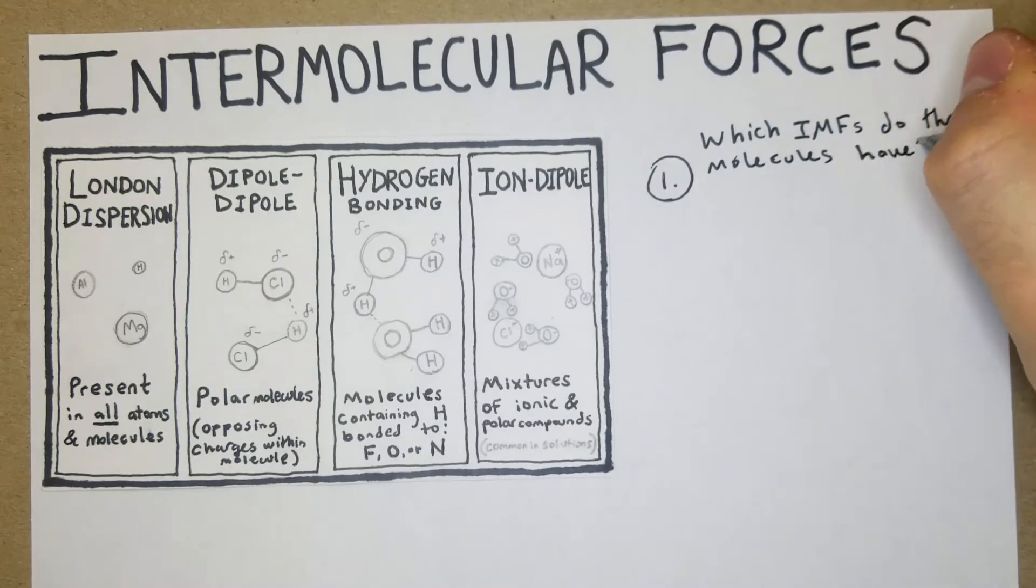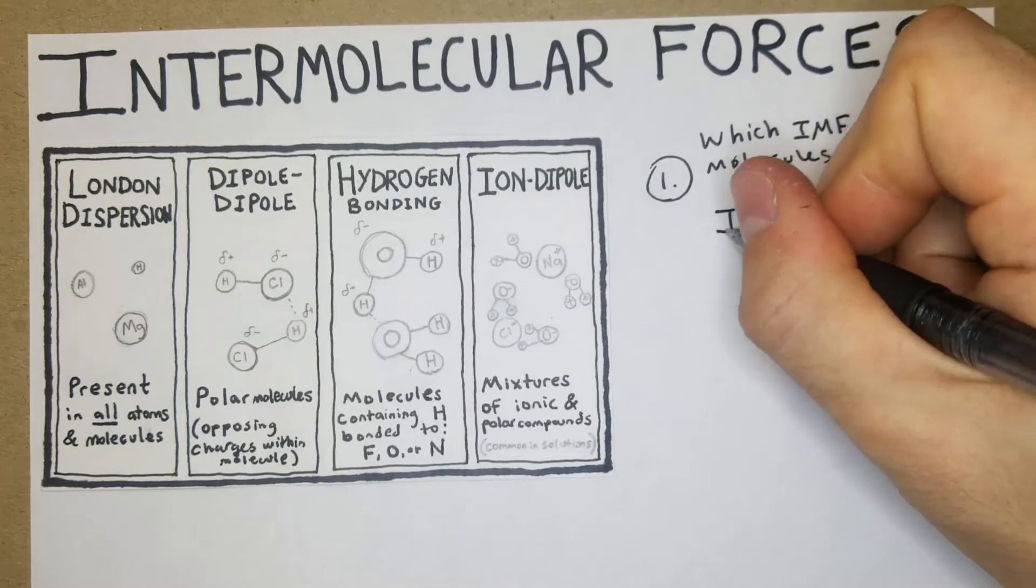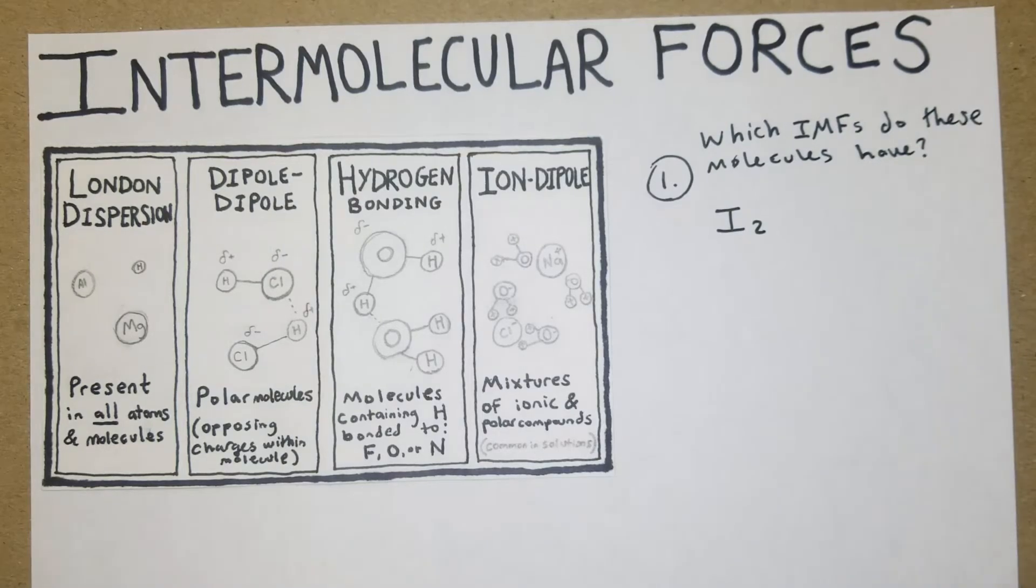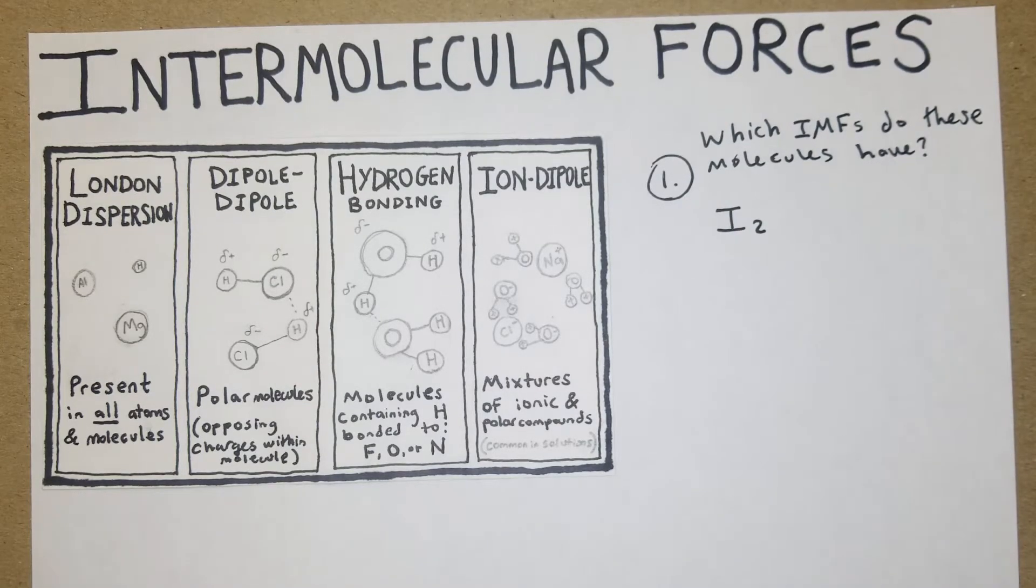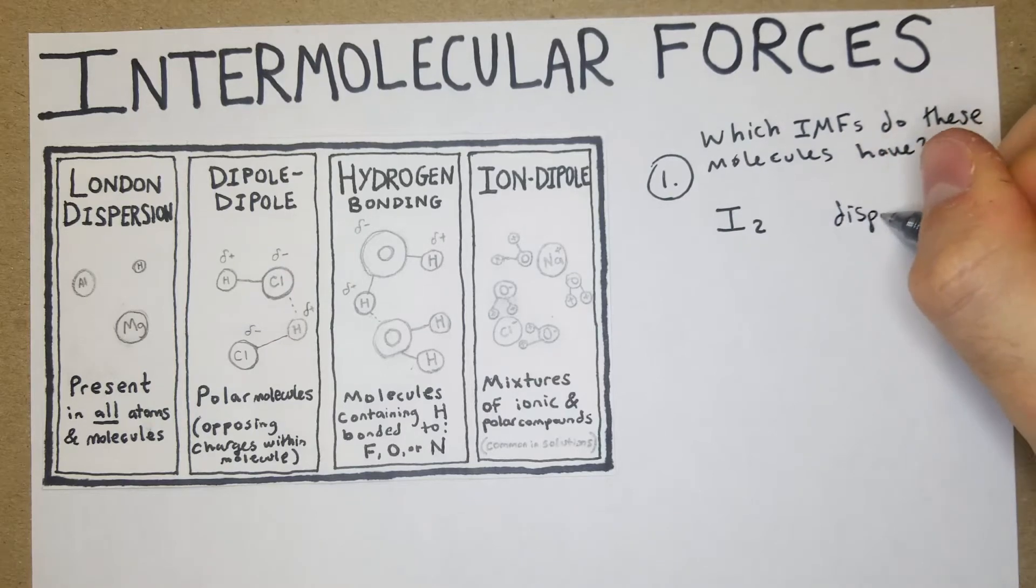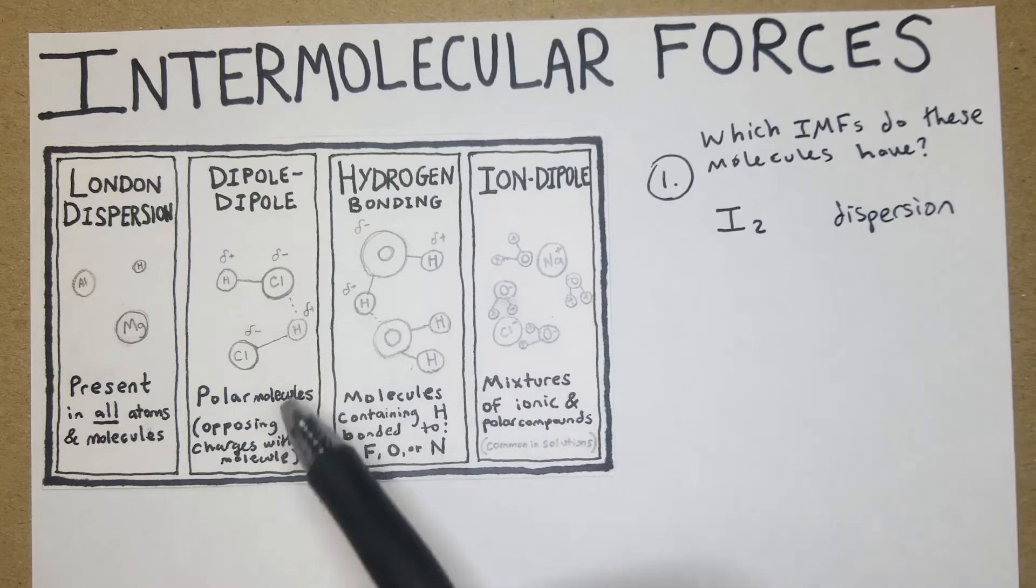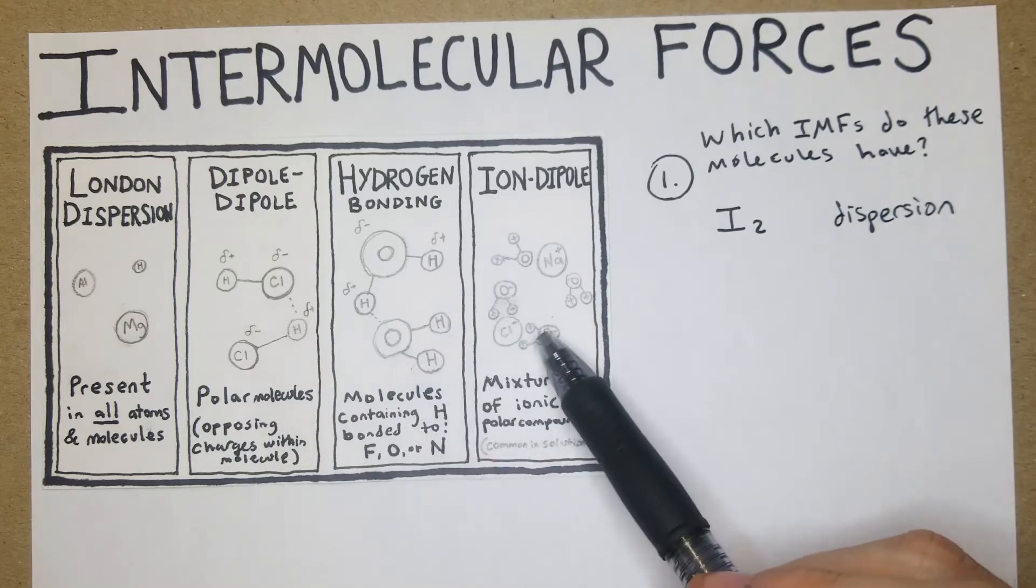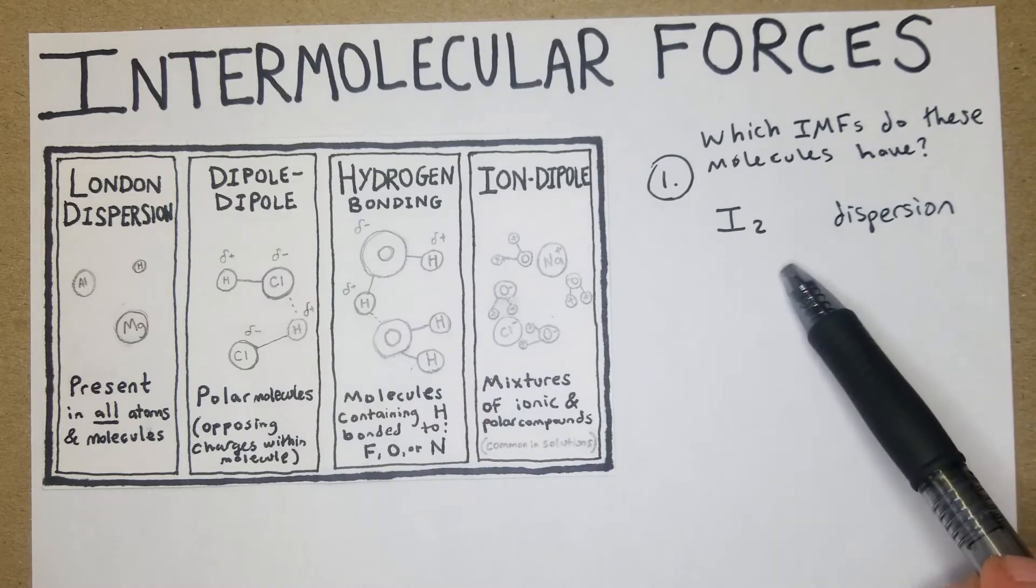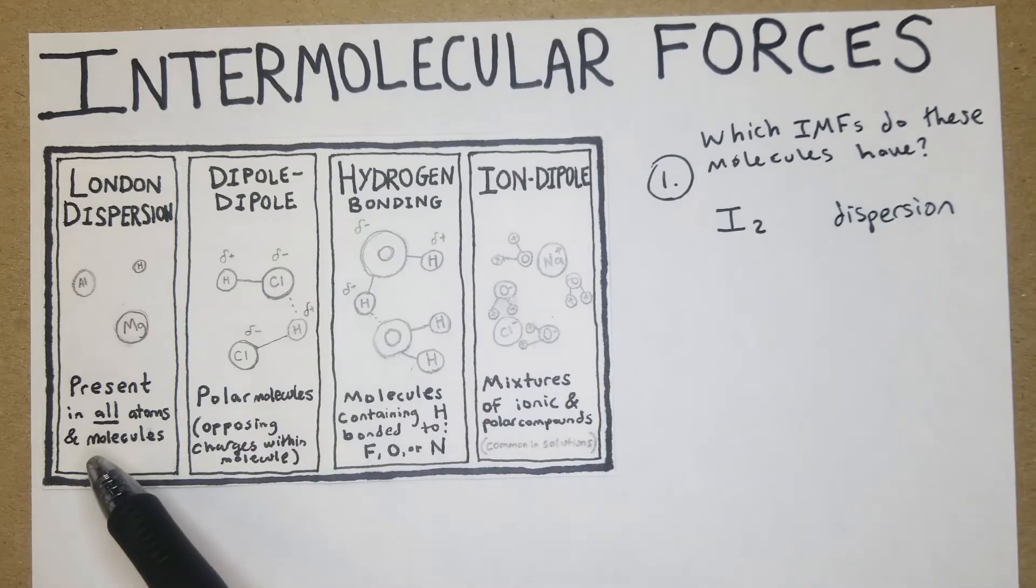The first one, I2 - you can draw it out if you want to, it seems really obvious, but basically this is just going to be dispersion forces. Knowing I2, it's two of the same element, it's not going to have a dipole, it's obviously not going to have hydrogen, and ion-dipole is out of the question as well because we're just looking at a single element that's a diatomic.